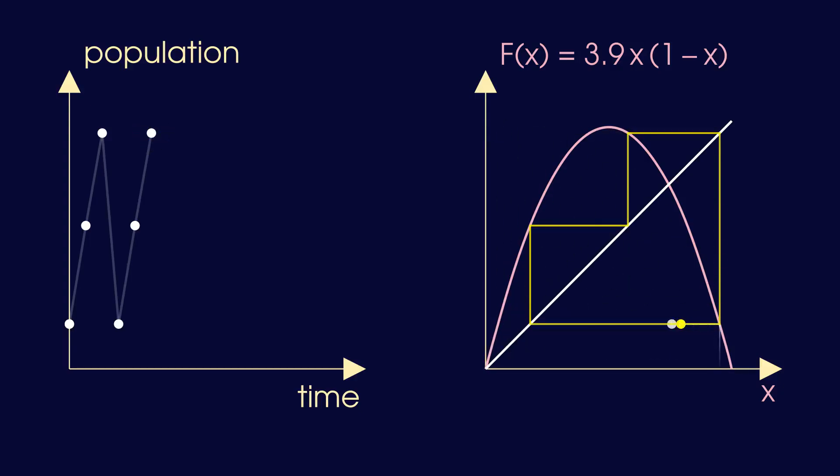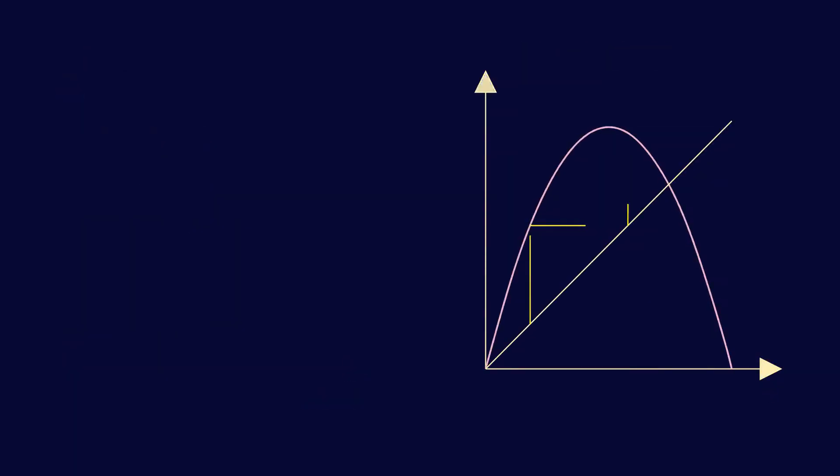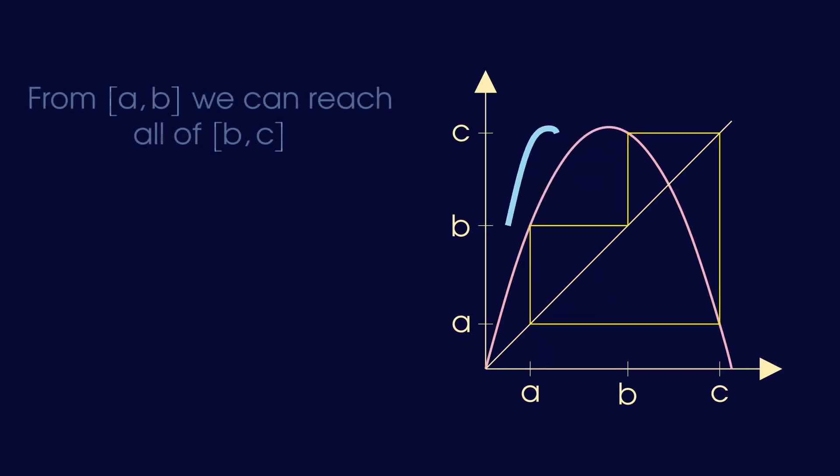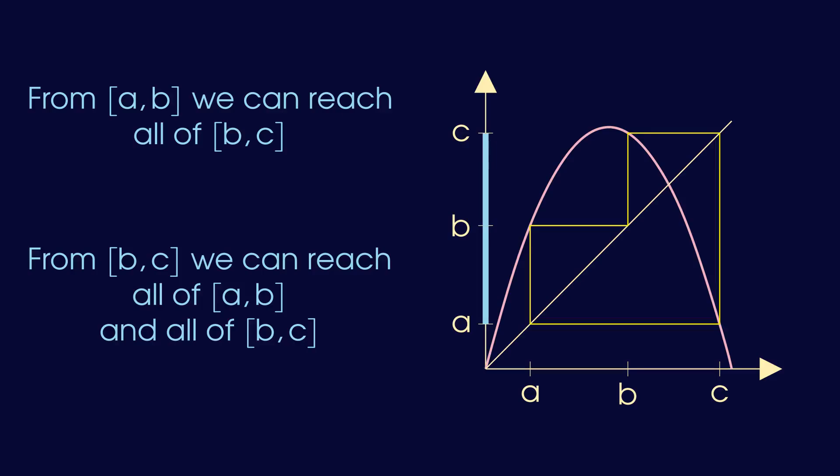What we need to prove this is not actually the existence of a 3-periodic solution itself, but the possible transitions between certain intervals that it implies. Let's break this down. If the 3-periodic solution has values a, b and c, as shown on the cobweb diagram, we focus on two intervals, the intervals ab and bc. The key property of these intervals is that from ab we can reach any value in bc. And from bc we can reach any value in ab, but also any value in bc itself.